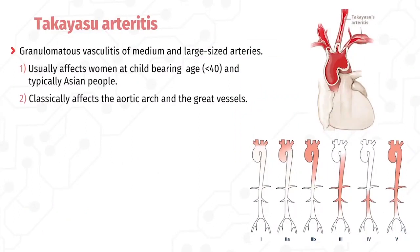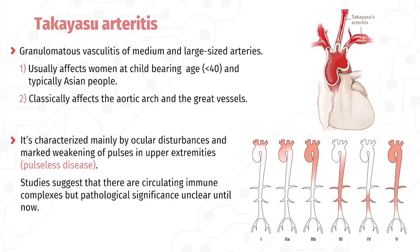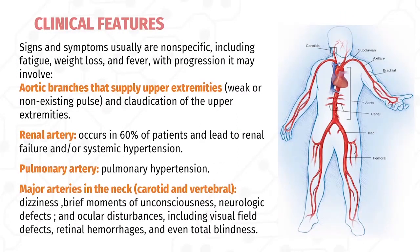Takayasu arteritis is a granulomatous vasculitis of medium and large-sized arteries, very similar to GCA except for two key differences: it usually affects women of childbearing age, typically Asian people, and classically affects the aortic arch and great vessels, leading to severe luminal narrowing. It is characterized mainly by ocular disturbances and marked weakening of pulses in the upper extremities — hence called 'pulseless disease.' Clinical symptoms are non-specific including fatigue, weight loss, and fever; with progression it may involve the aortic branches supplying the upper extremities, leading to weak or absent pulse.